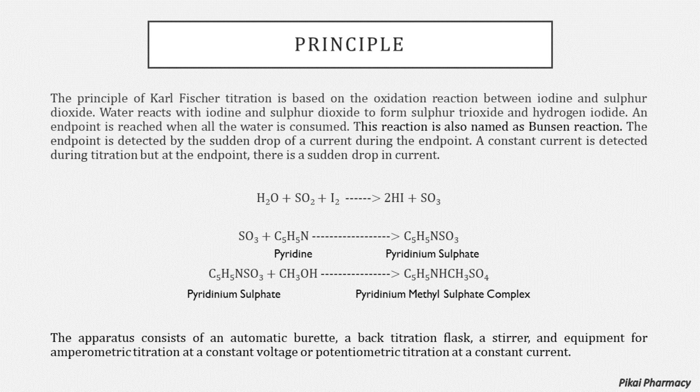This Karl Fischer titrometric apparatus consists of an automatic burette, a back titration flask, a stirrer, and equipment for amperometric titration at a constant voltage or potentiometric titration at a constant current — all for the determination of the endpoint.